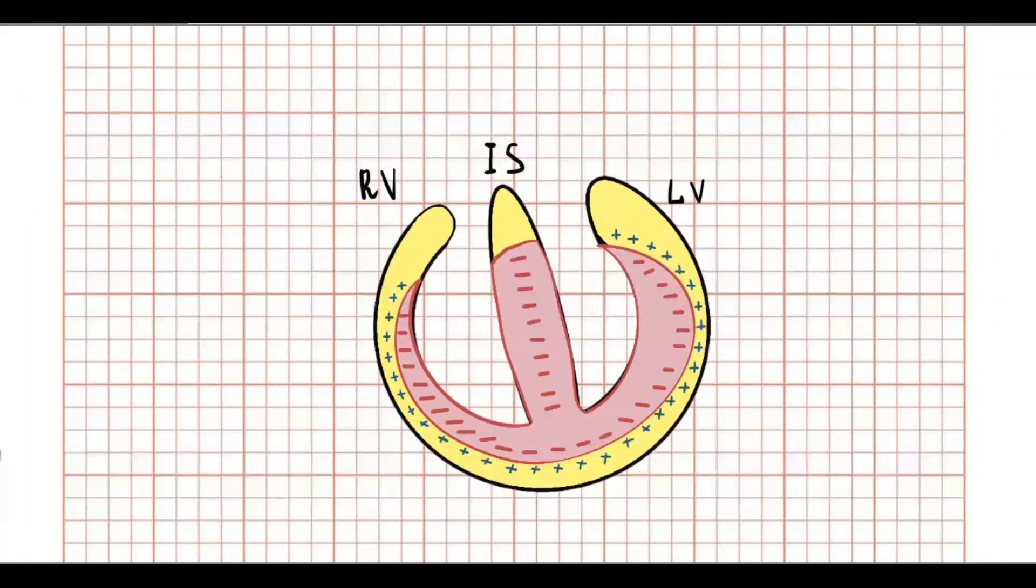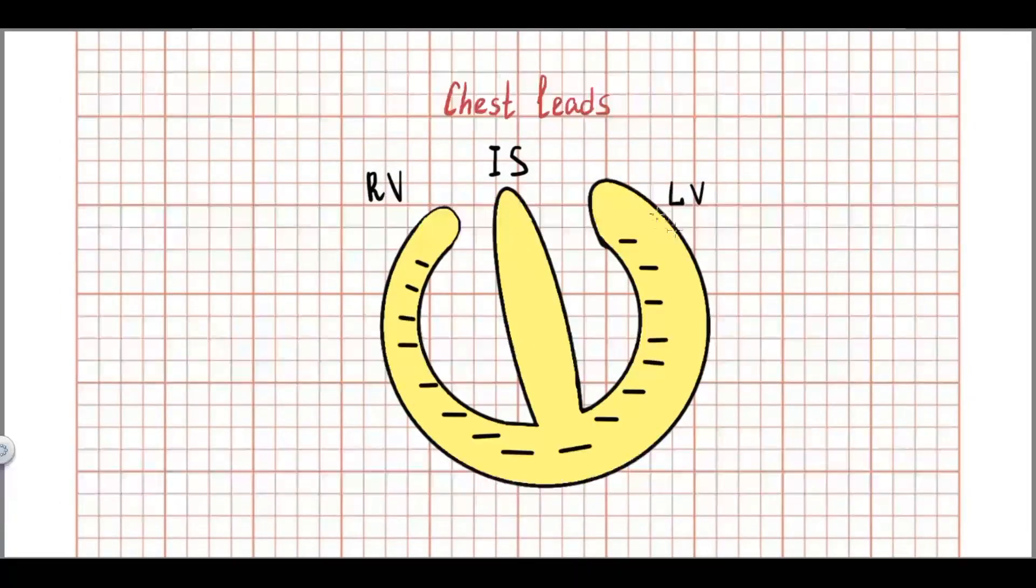Let's speak about ventricular repolarization. As you know, the depolarization spreads from endocardium to epicardium. Therefore, epicardium depolarizes later than endocardium, but epicardium action potential is faster than in endocardium.